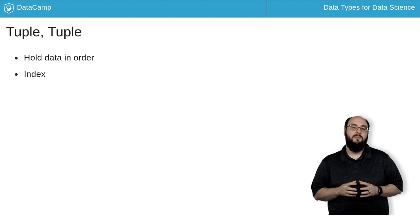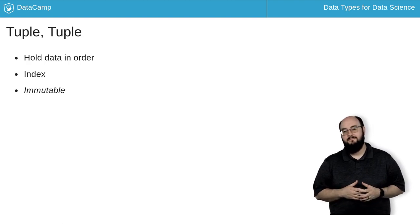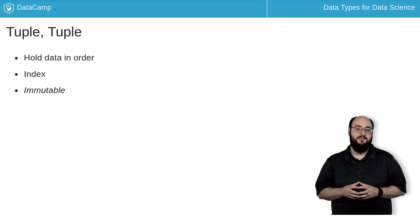Tuples are easier to process and more memory efficient than lists. Tuples are also immutable, which means that we can't add or remove elements from them. This is powerful because we can use them to ensure that our data is not altered.